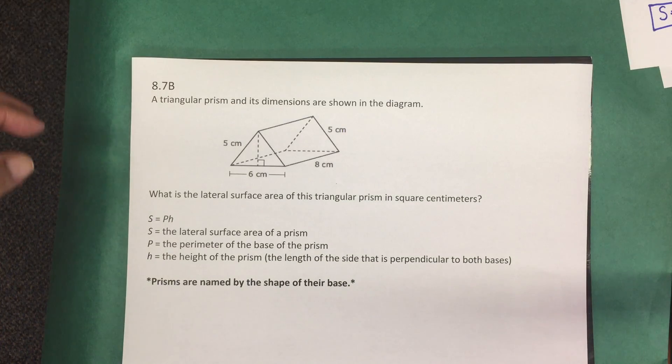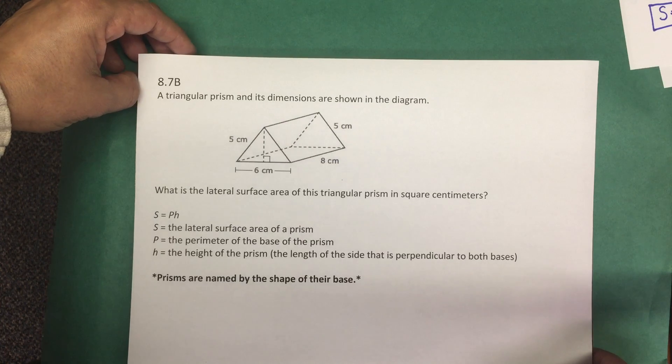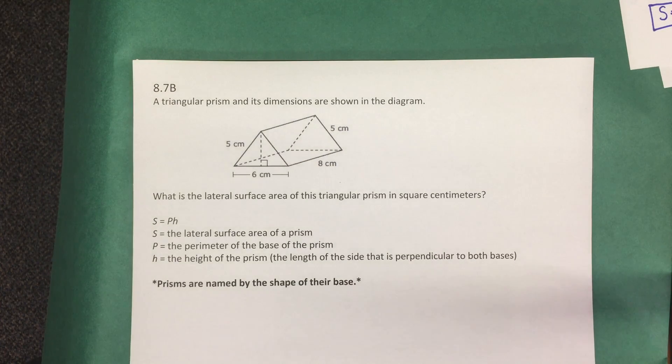So let's look at this released assessment item. This assessment item is from the 2016 March assessment of the eighth grade STAR test. A triangular prism and its dimensions are shown in the diagram. What is the lateral surface area of this triangular prism in square centimeters?